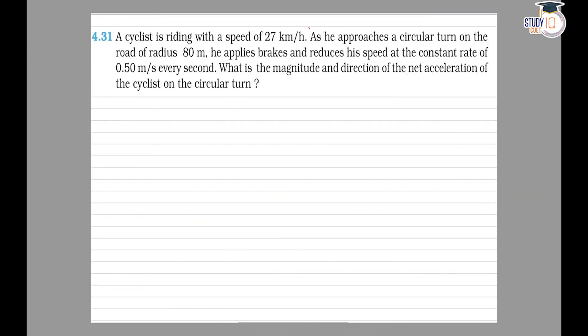NCERT Physics Class 11, Chapter 4, Question 4.31. In this problem, a cyclist is riding with a speed of 27 kilometers per hour and approaches a circular turn on the road of radius 80 meters. The cyclist applies the brakes and the speed reduces at a rate of 0.5 meters per second squared. We need to find the magnitude and direction of the net acceleration of the cyclist.